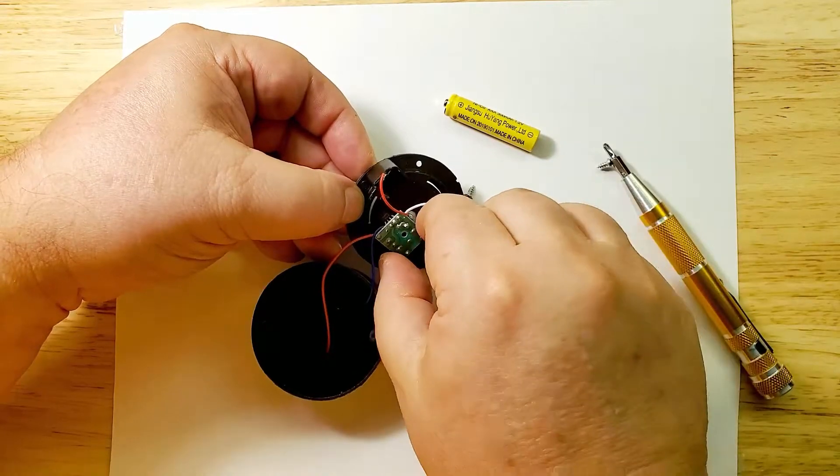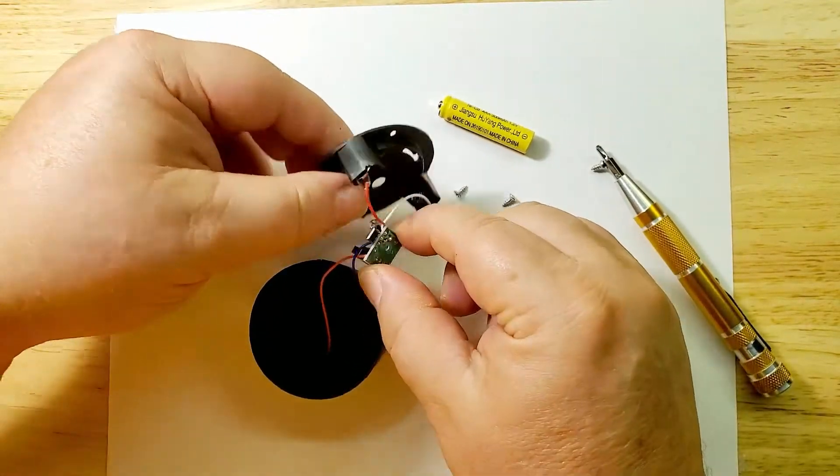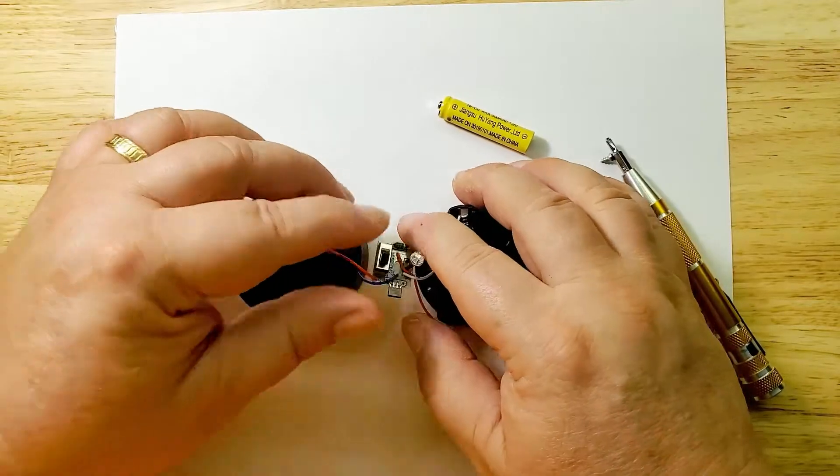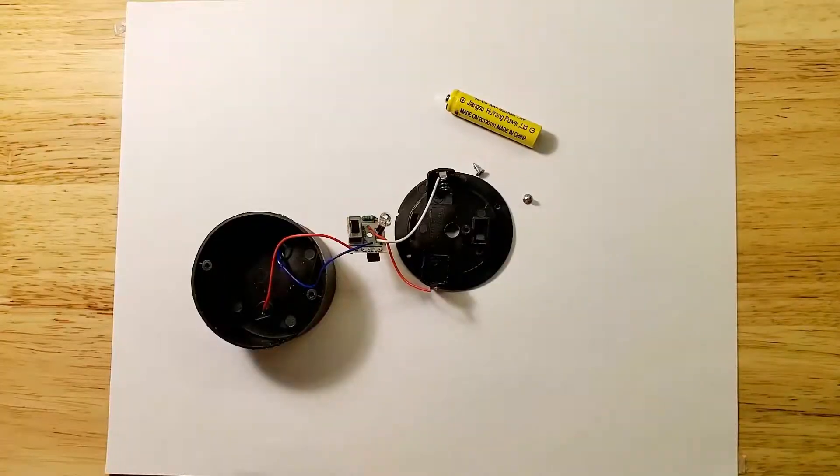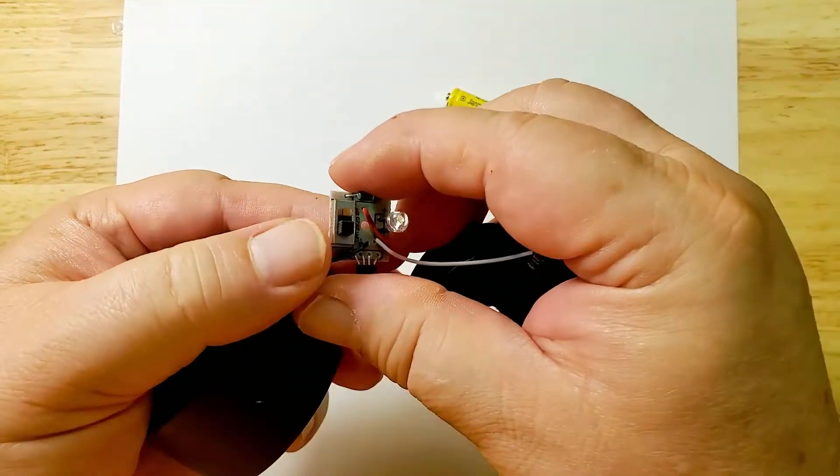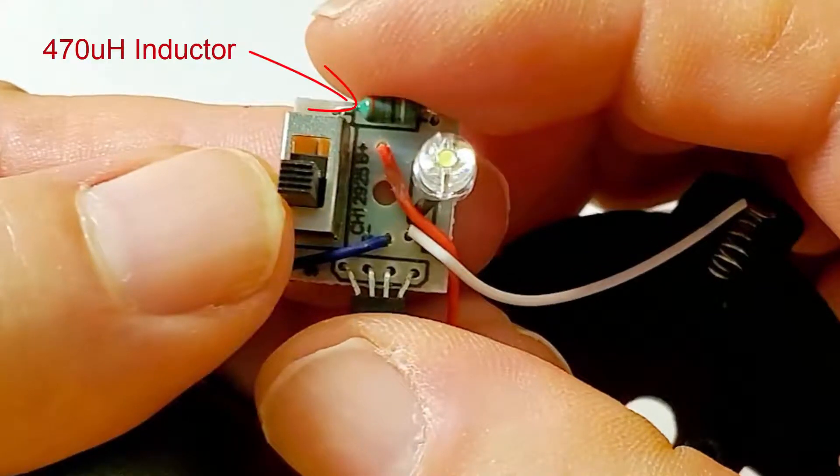The circuit board is held in by just one screw and it's very simple. It has an on and off switch, a little chip on it, an inductor and the LED is directly attached.